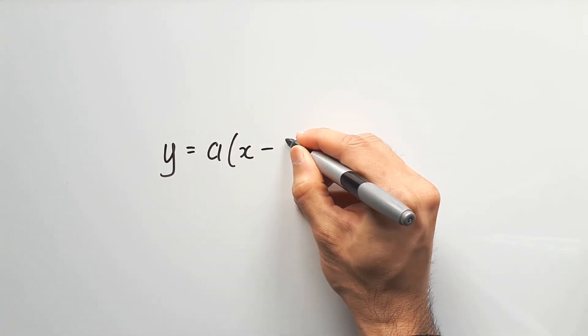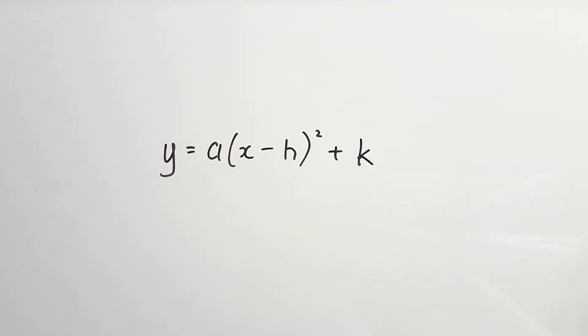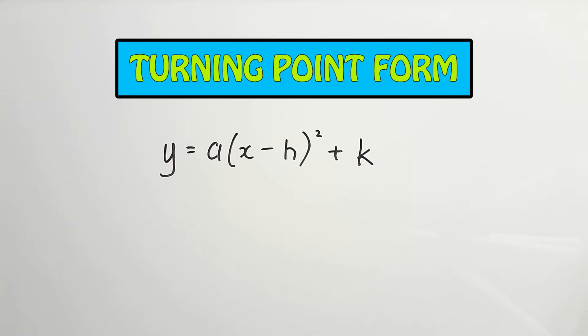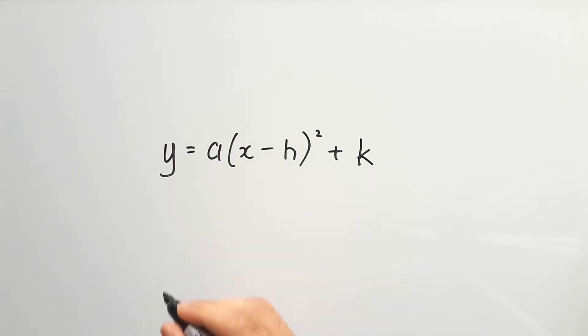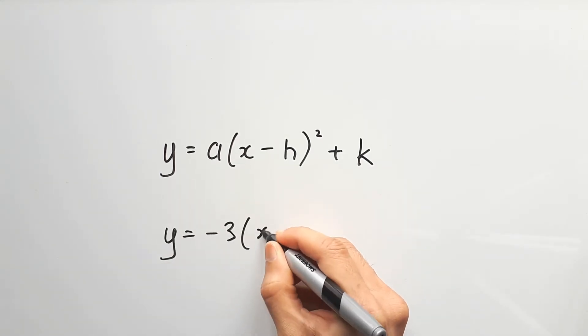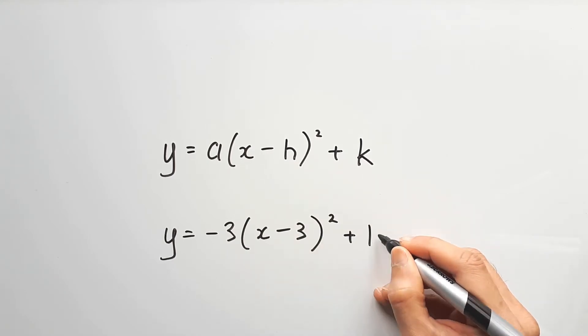y equals a(x minus h) squared plus k. This is the turning point form of a quadratic equation. Here's an example: y equals negative 3 times (x minus 3) squared plus 12.